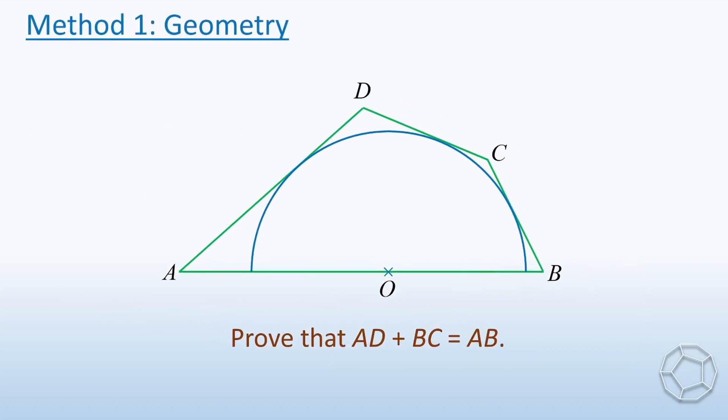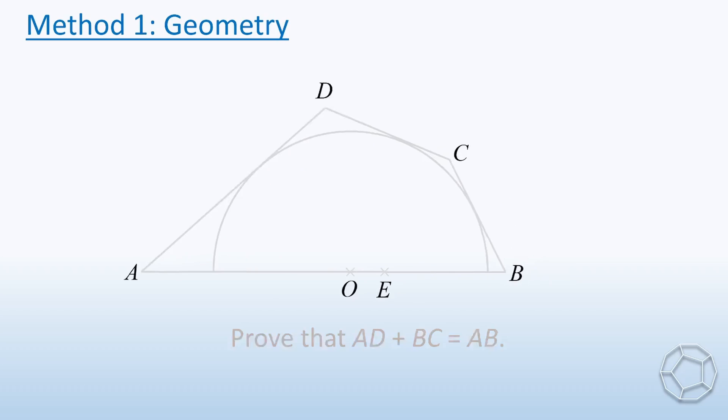To start with, let's rotate the two blue sides AD and BC. If the sum of lengths is really AB, then the two sides should meet at a single point E. This gives us a great idea to solve the problem.